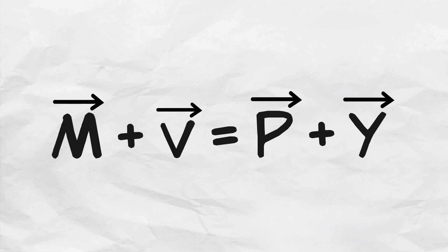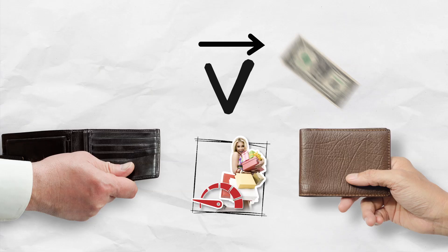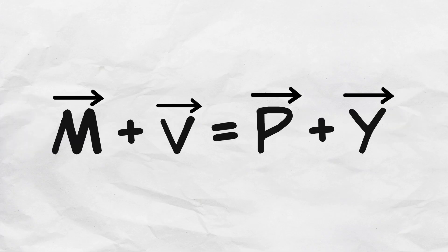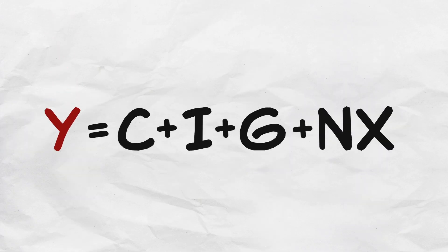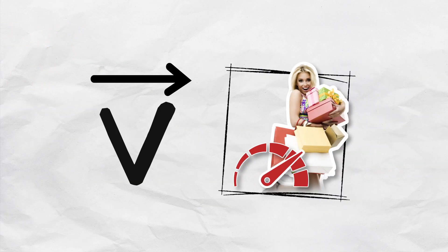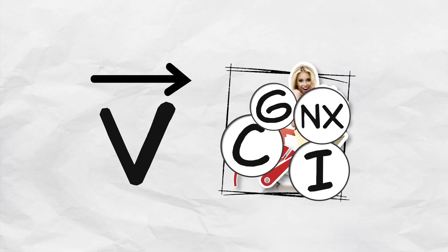You can think of velocity as how often money changes hands. So an increase in V means that spending has increased because money is changing hands at a faster rate. It's useful to recall the national income spending identity: Y is equal to C plus I plus G plus NX. This just breaks spending down into different categories. So if V changes, then the growth rate of either C or I or G or NX must change.